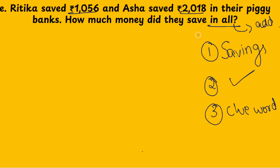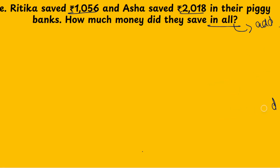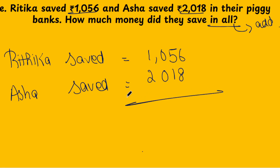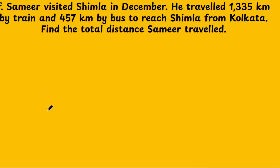Writing it down: Rithika saved = 1056; Asha saved = 2018. You need to add the numbers and write the answer.